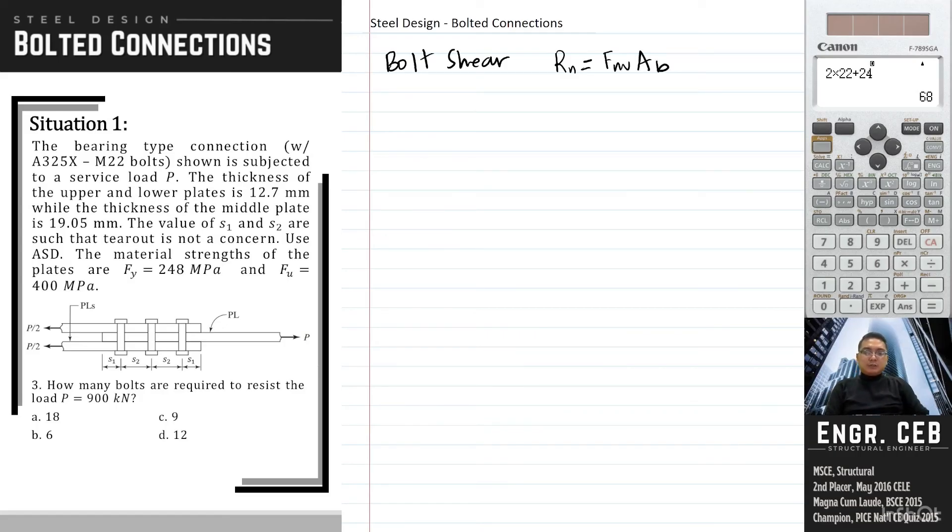So notice in our figure, the upper plate and the middle plate has different demands. So for the upper plate, the demand is P over 2. And then for the middle plate, the demand is P. So let us analyze independently the plates.